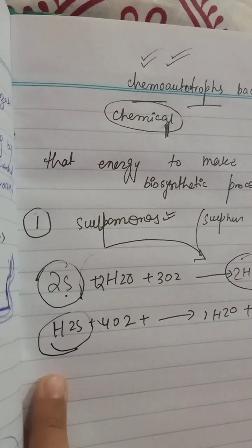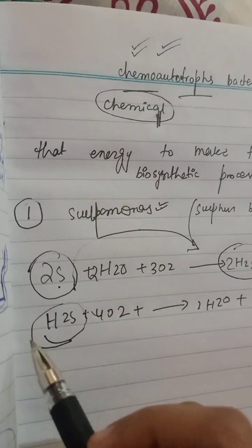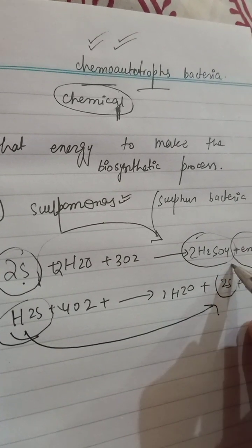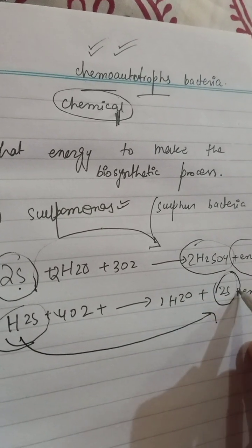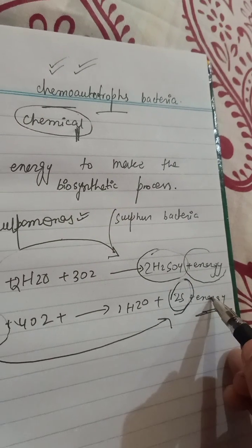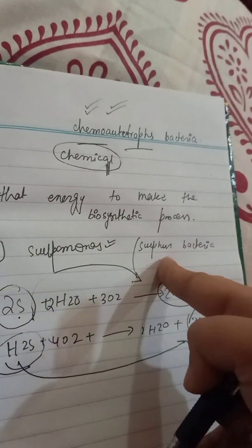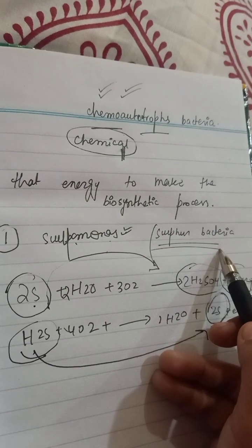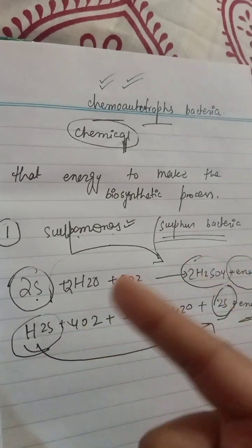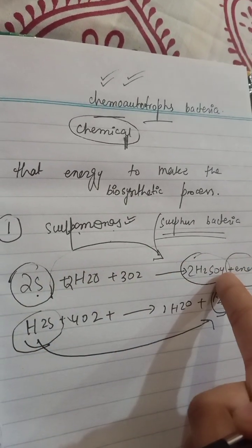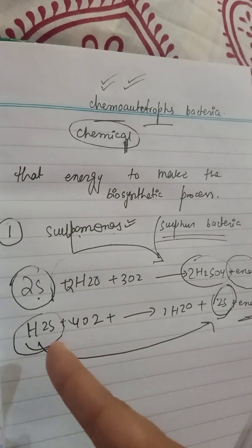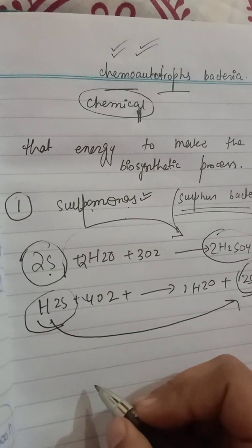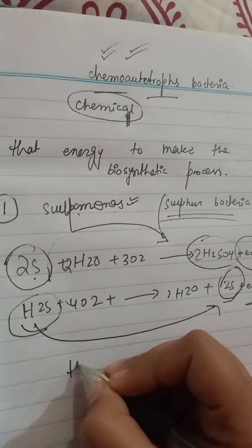They can also oxidize H2S (hydrogen sulfide) which converts into elemental sulfur, and the energy released is reused in the biosynthesis process. These are the Sulfomonas — sulfur bacteria — which oxidize sulfur into sulfuric acid or oxidize hydrogen sulfide into sulfur. An example of such bacteria is Thiobacillus.